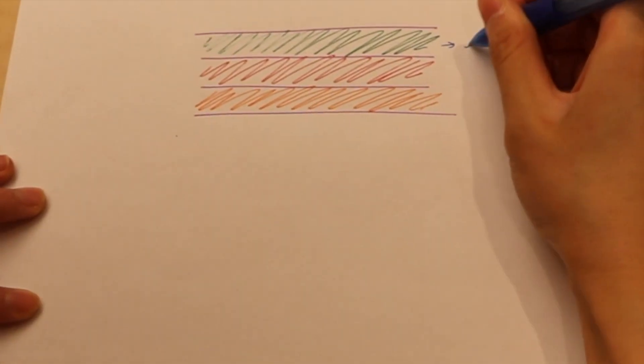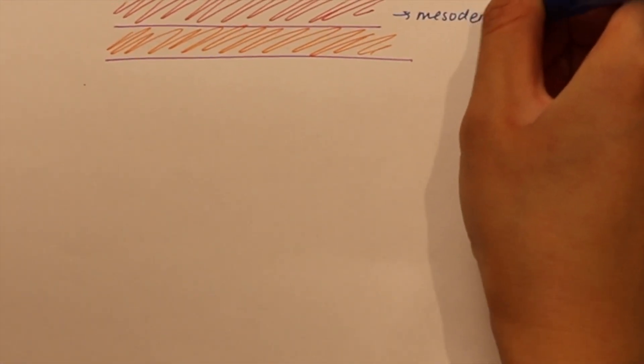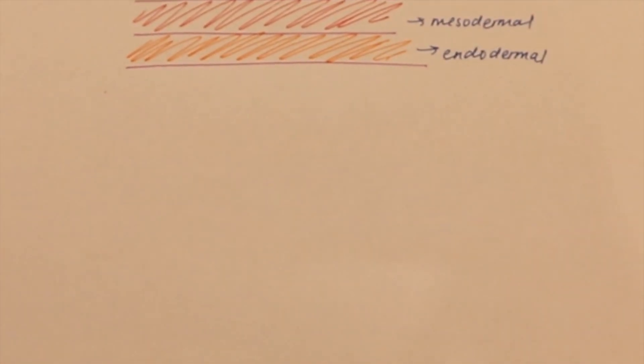So we have our ectodermal layer, our mesodermal layer, and our endodermal layer. For the purposes of studying neurodevelopment, we're only going to focus on the ectodermal layer, since it's out of this germ layer that our brain structure actually arises from.